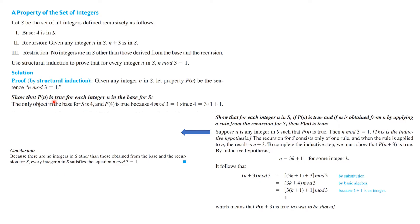So p(n) is the statement: given any integer n in S, n mod 3 is 1. We're going to show that p(n) is true for each integer n in the base. The only thing in the base is 4, and if you divide 4 by 3 you certainly get remainder 1, so that gets checked off. Now what we have to show is: for each integer n in S, if p(n) is true and m is obtained from n by applying the rule n plus 3, then p(m) has to be true.